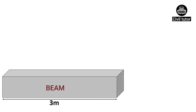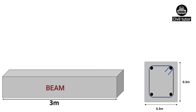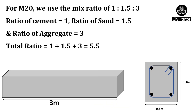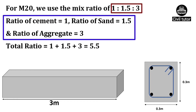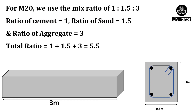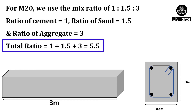For illustration, let's consider any structural member — say a beam of length 3 meters and area of cross section equal to 0.3 meter by 0.3 meter. The grade of concrete used is M20. For M20 grade of concrete, we use the mix ratio 1:1.5:3 — that is, 1 part of cement mixed with 1.5 parts of sand and 3 parts of coarse aggregates. The total ratio of all these ingredients will be 1 + 1.5 + 3 = 5.5.